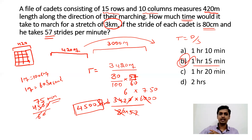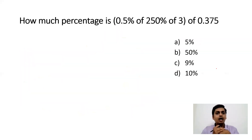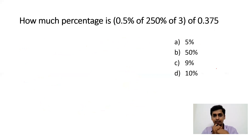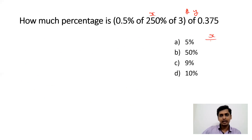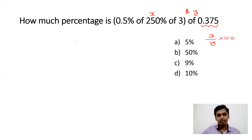Hope you understood. Now moving to the second question: How much percentage is 0.5% of 250% of 3 of 0.375? It's very simple. The formula is: how much percentage is X of Y — that equals X/Y × 100. The values in brackets form X, and after 'of' you have Y.